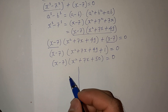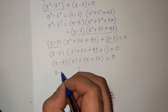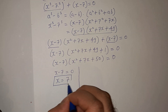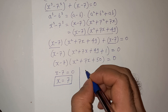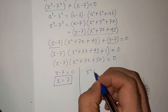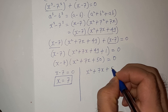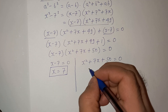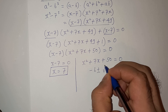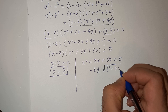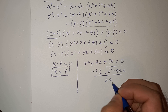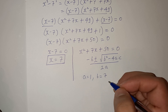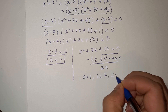So we have two solutions. One is x minus 7 equals to zero, which gives x equals to 7. That is the first solution. For the second part, we use the quadratic formula: x equals minus b plus or minus root(b² minus 4ac) divided by 2a. Here a = 1, b = 7, and c = 50.